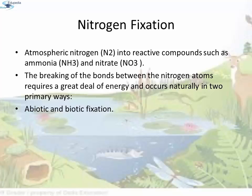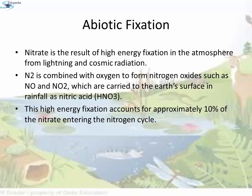Nitrogen fixation is the conversion of atmospheric nitrogen into reactive compounds such as ammonia and nitrate. The breaking of the bonds between nitrogen atoms requires a great deal of energy and occurs naturally in two primary ways: abiotic and biotic nitrogen fixation. In abiotic nitrogen fixation, nitrate results from high-energy fixation in the atmosphere from lightning and cosmic radiation. N2 is combined with oxygen to form nitrogen oxides such as NO and NO2, which are carried to the earth's surface in rainfall as nitric acid (HNO3). This accounts for approximately 10% of nitrate entering the nitrogen cycle.